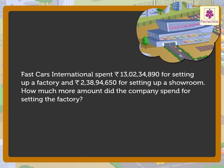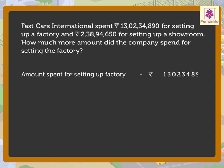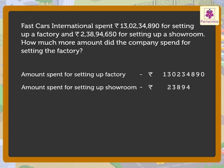Now to find the answer, let us write the statements first. The amount spent for setting up factory: rupees thirteen crore two lakh thirty four thousand eight hundred ninety. The amount spent for setting up showroom: rupees two crore thirty eight lakh ninety four thousand six hundred fifty.